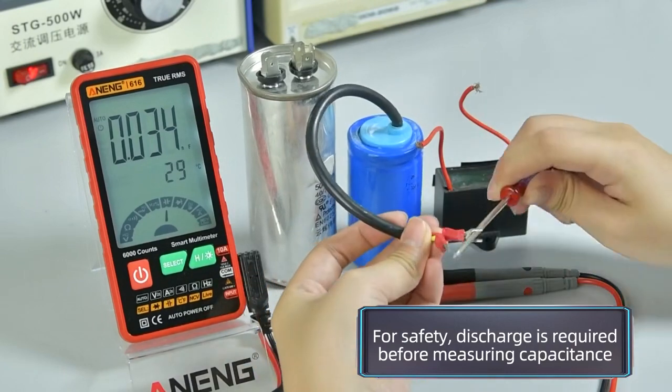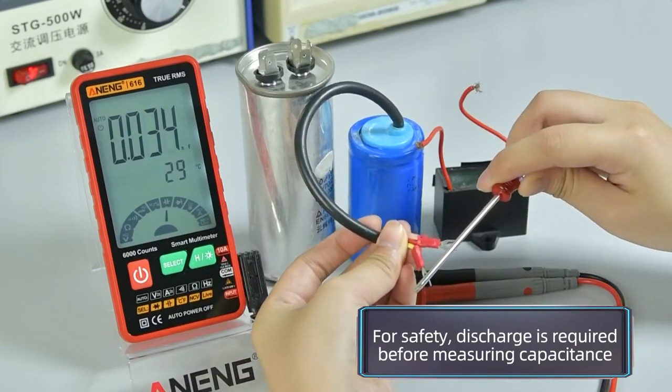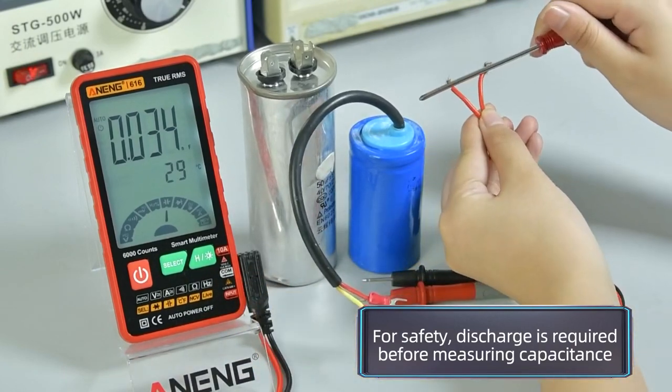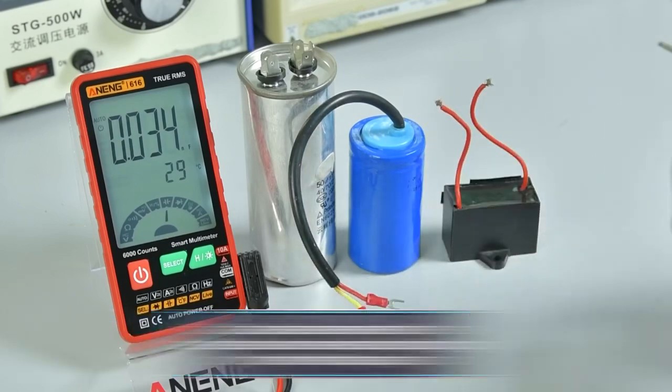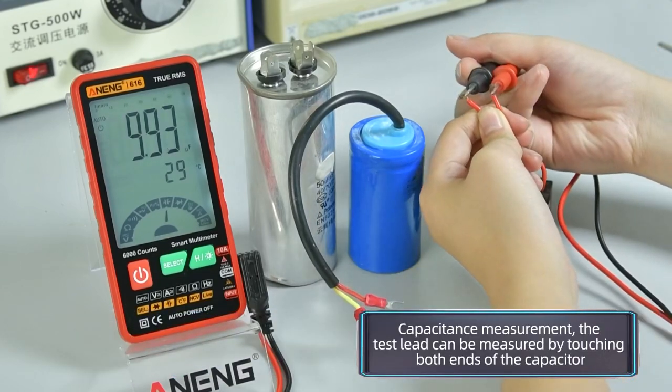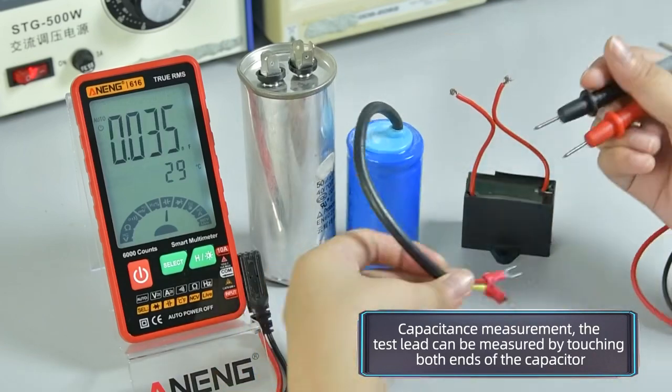Capacitance measurement. The test leads can be measured by touching both ends of the capacitor.